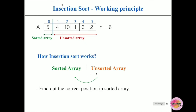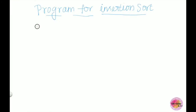Now let's write a program for insertion sort. We need two loops: one for the unsorted array and one for the sorted array. We take elements one by one from the unsorted array and compare them with elements of the sorted array. The outer loop runs from 1 to less than n, so: for(int i = 1; i < n; i++).